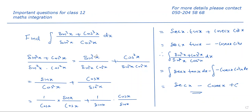In the first term, sin²x cancels from numerator and denominator, leaving sin x over cos²x. In the second term, cos²x cancels from numerator and denominator, leaving cos x divided by sin²x.